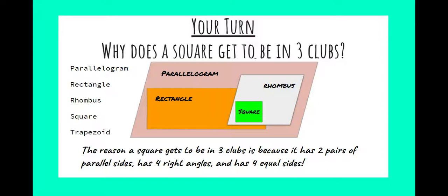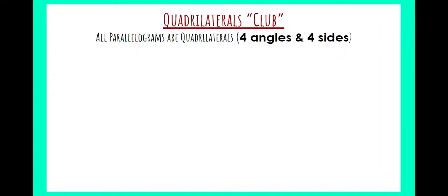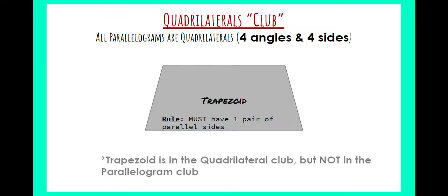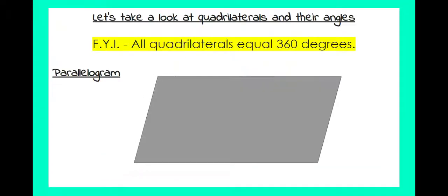Now we're going to talk about the quadrilateral club a bit more, specifically the trapezoid. Keep in mind all parallelograms are quadrilaterals because they have four angles and four sides. The rule for the trapezoid is that it must have one pair of parallel sides, while other parallelograms have two pairs. So a trapezoid is able to get into the quadrilateral club, but it is not a part of the parallelogram club.